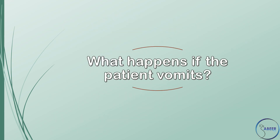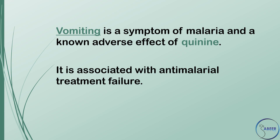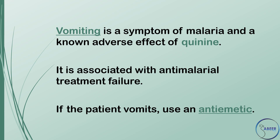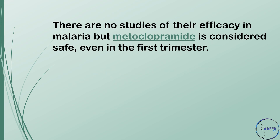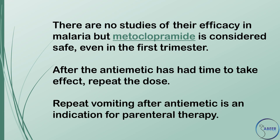What happens if the patient vomits? Vomiting is a symptom of malaria and a known adverse effect of quinine; it is associated with anti-malarial treatment failure. If the patient vomits, use an anti-emetic. There are no studies of their efficacy in malaria, but metoclopramide is considered safe even in the first trimester. After the anti-emetic has had time to take effect, repeat the dose. Repeat vomiting after anti-emetic is an indication for parenteral therapy.